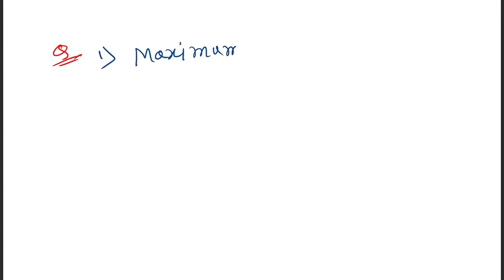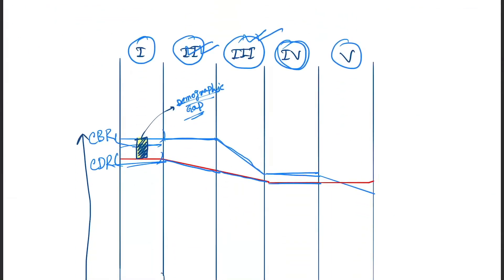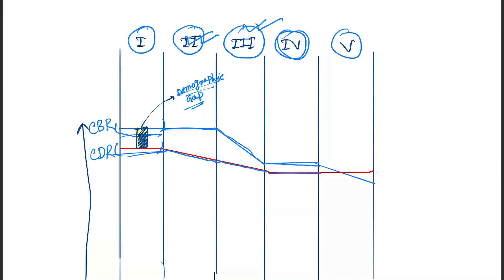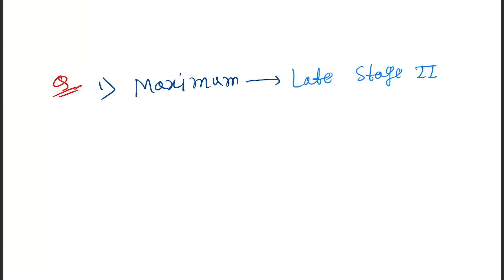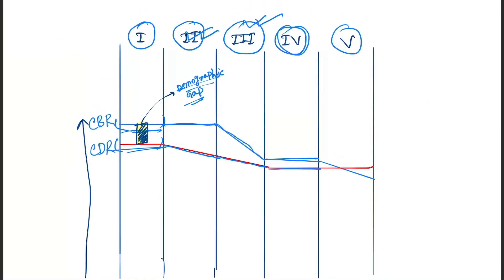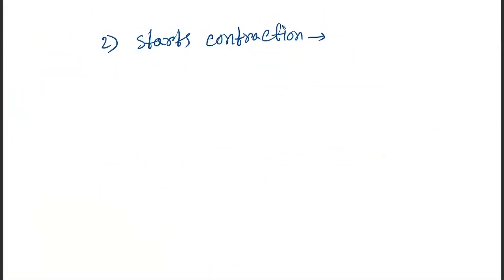Now let's solve four questions about the demographic gap. First question: where does the demographic gap get maximum? Looking at the graph, you can see the maximum gap occurs at late phase two. Second question: where does it start contracting? It starts contracting from early phase three.